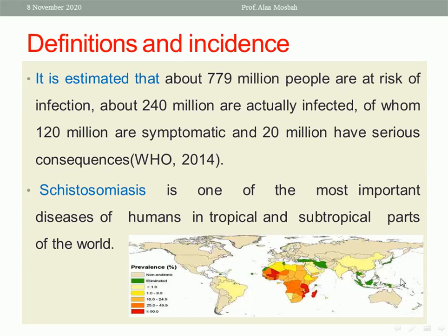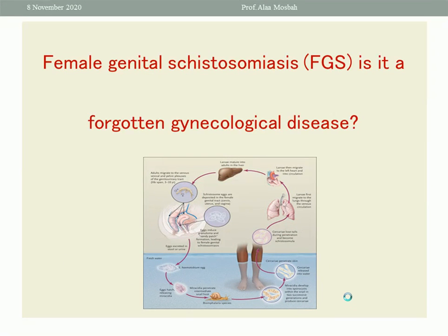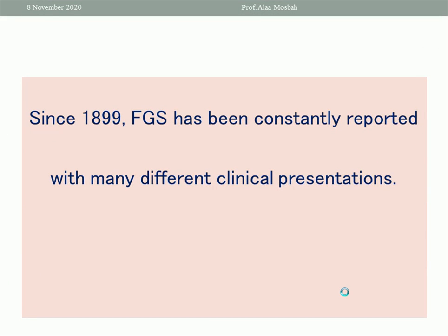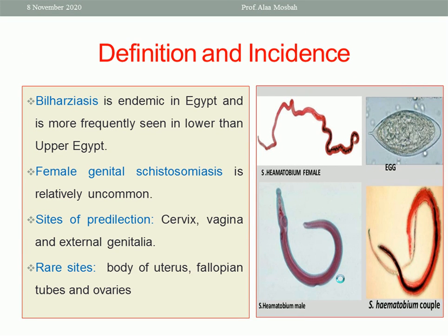You can see the geographic distribution of this parasitic disease all over the world in this map. As you see, it is more common in Africa. Female Genital Schistosomiasis — is it a forgotten gynecologic disease? Since 1899, it has been constantly reported with many different clinical presentations, so we should take care about this disease because it is important and has some complications. Bilharziasis is endemic in Egypt and African countries and is more frequently seen in lower than upper Egypt.